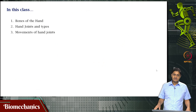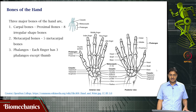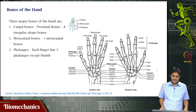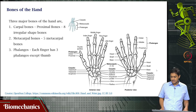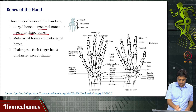In this video we will be looking at the bones of the hand, the joints within the hand, the types of joints, and the movements made by these joints. There are three major types of bones within the hand. The first is the carpal bones — these are the most proximal of the bones within the hand. There are eight of these bones and they are irregularly shaped, being the proximal bones closest to the wrist joint.